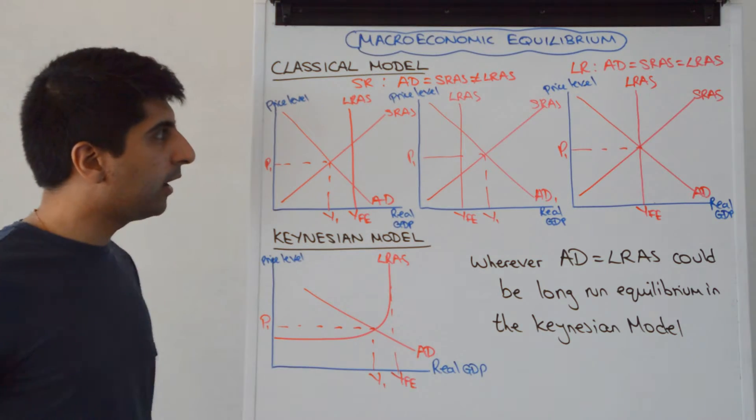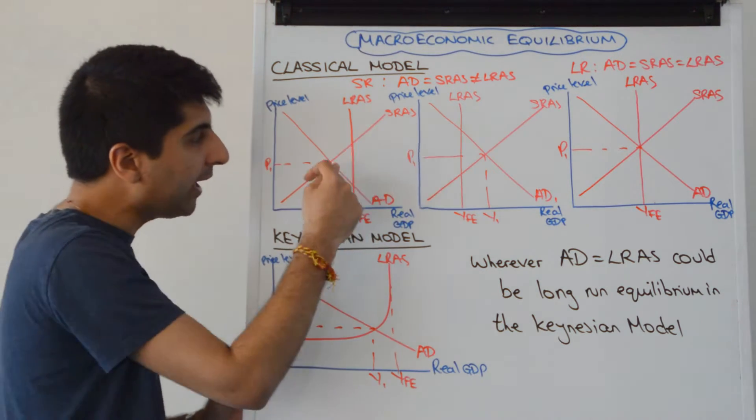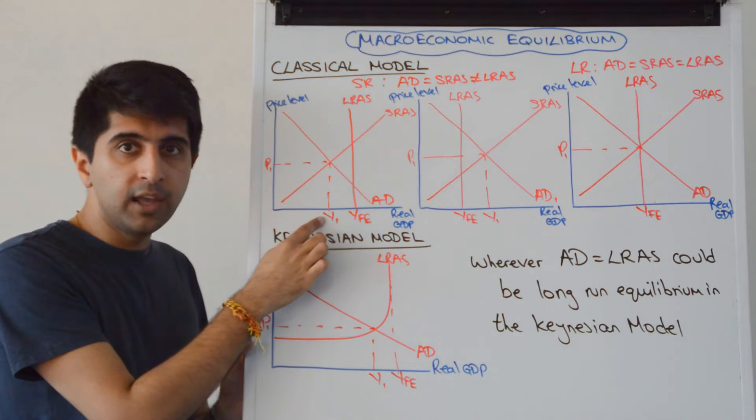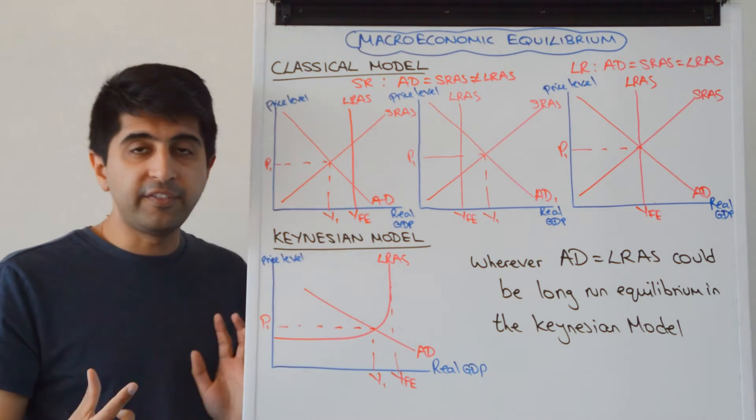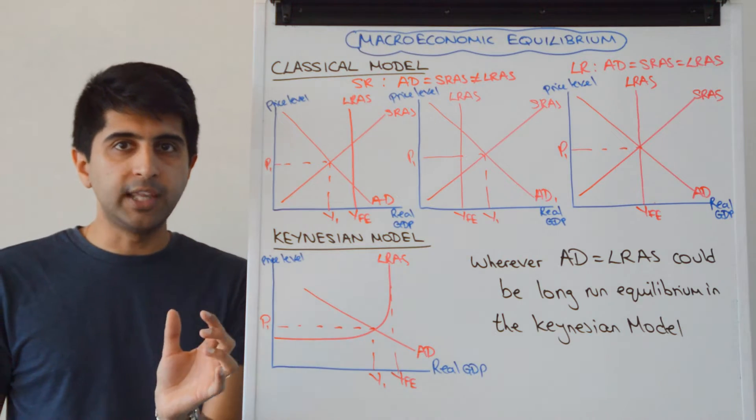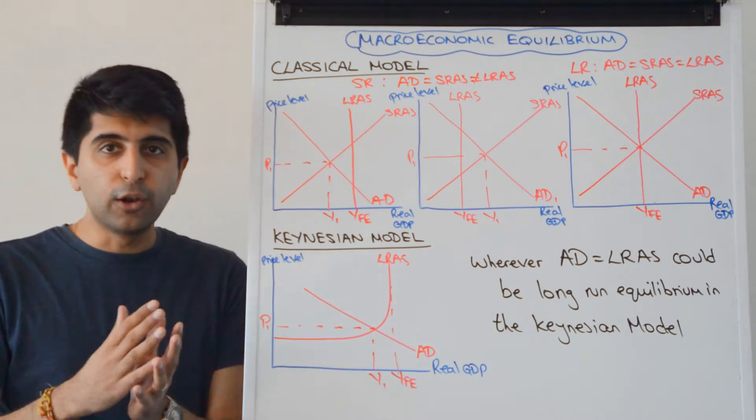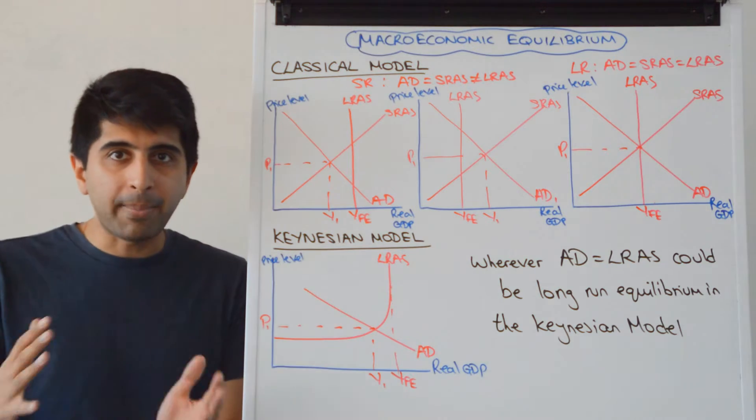Let's look at this left-hand diagram first. You can see that where AD equals SRAS is not equal to LRAS. We're producing Y1 in the economy, not YFE. This deviation must be a short-run equilibrium according to classical economists because we're not at YFE. In the long run this will not persist. We'll get back to YFE.